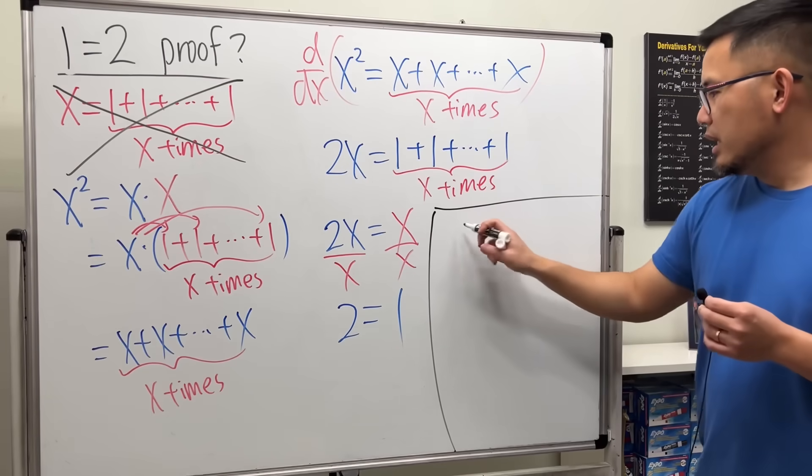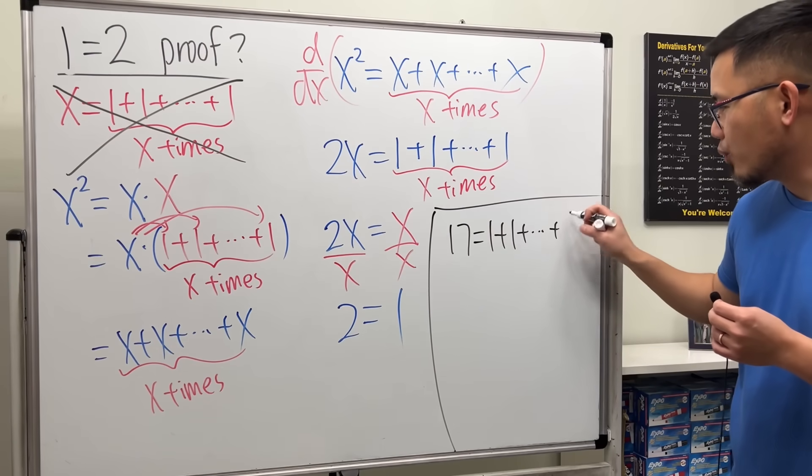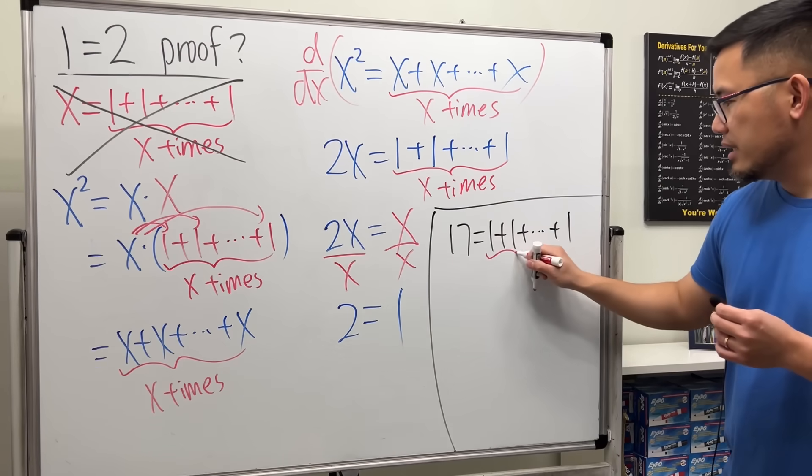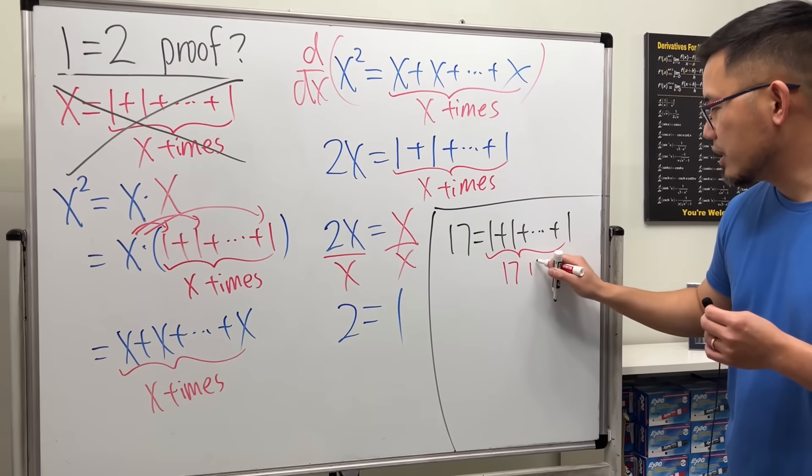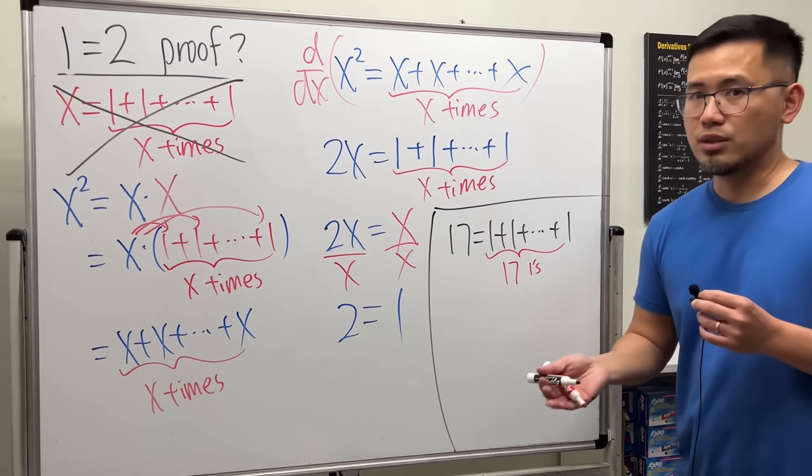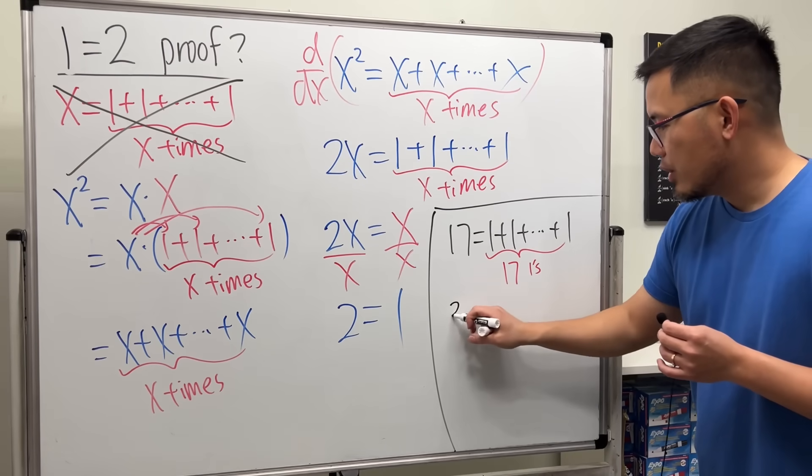So right here, if you want say 17, of course you can say 1 plus 1 plus up to 1, yeah, and then you can say we wrote down the 1 seventeen times. So here we have 17 ones. That's okay. But what if you have, let's say, 2/3?